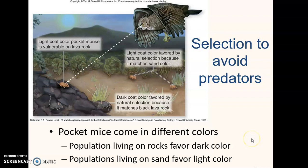Natural selection is the only agent of change that produces an adaptive change. There are a lot of ways that it can come about. A lot of times natural selection arises to avoid predation.